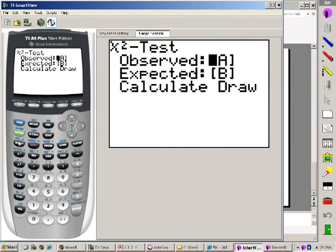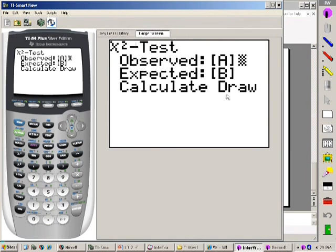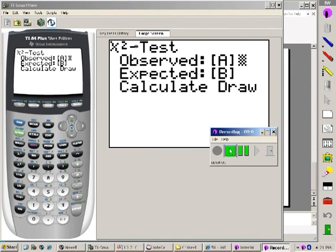Your observed should be matrix A. If it doesn't say matrix A, go to second matrix, and you can name it number one, matrix A, expected B. Here's what I want you to do. I want you to calculate, record down the chi-squared, and record down the p-value. And I also want you to draw it as well. So go ahead, give you about four minutes to do that, and then we'll come back together.